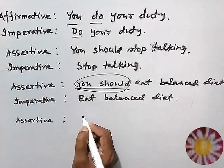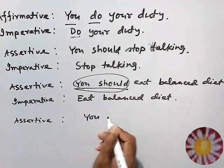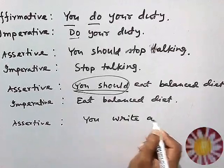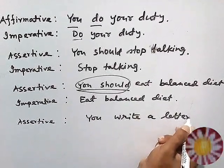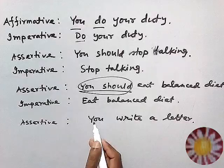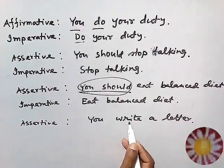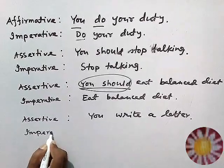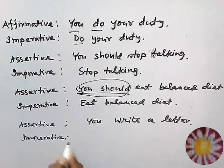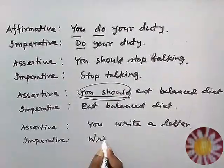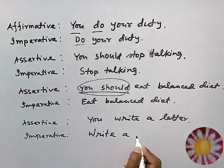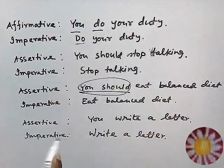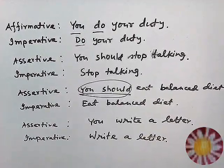This sentence will turn into an imperative sentence. For example: 'You write a letter.' Here, the subject is 'you' and the verb is 'write.' So if we change this statement into imperative, we write: 'Write a letter' — verb plus object. And it indicates an imperative sentence.